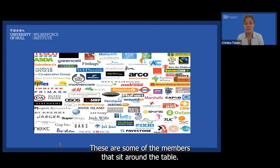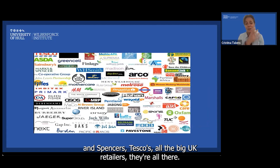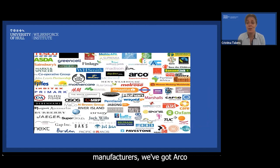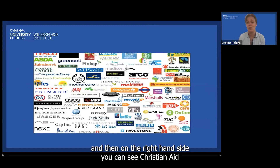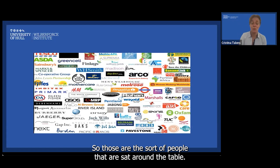These are some of the members that sit around the table. You can see Asda, Sainsbury's, Marks & Spencer, Tesco — all the big UK retailers are there. We've also got clothing manufacturers, we've got Arco which is a safety company, and clothing brands. On the right-hand side, you can see Christian Aid, Care International, Oxfam, and the Trade Union Congress. Those are the sort of people that are sat around the table.